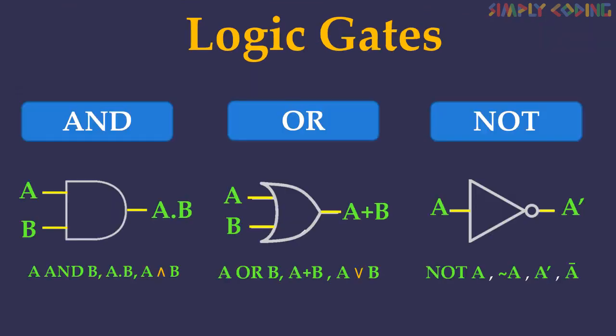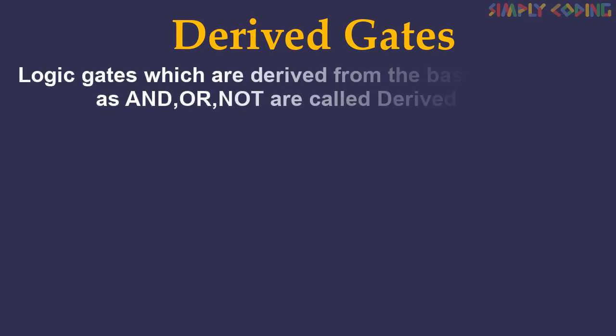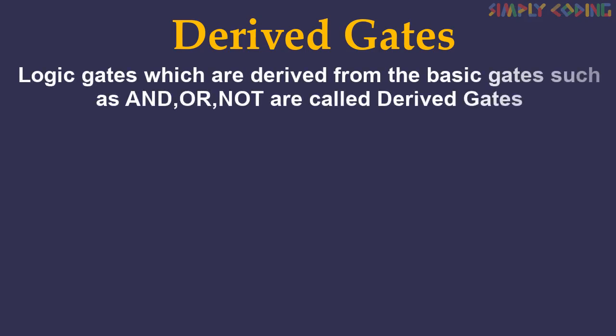In our previous video, we have learned about basic gates: AND, OR, and NOT. Logic gates which are derived from these basic gates are called derived gates.